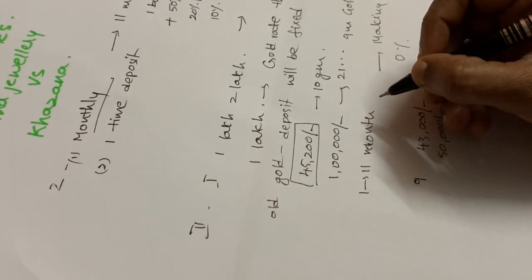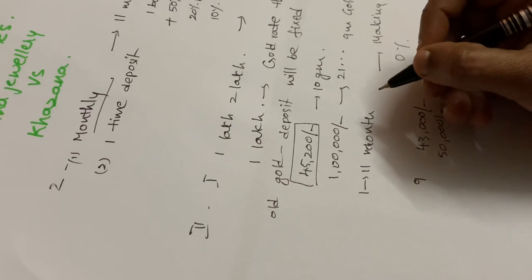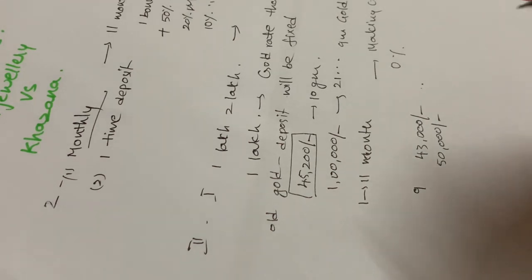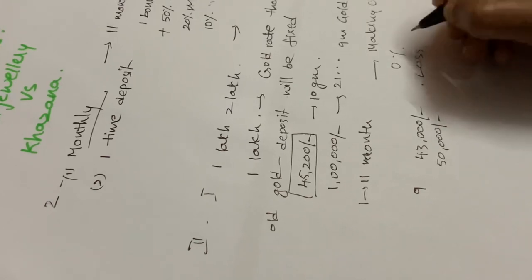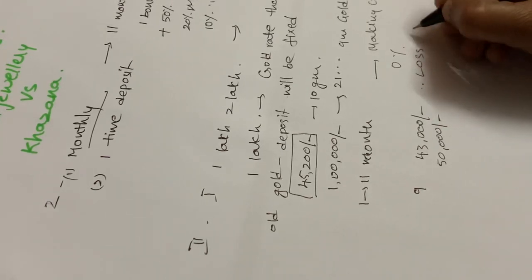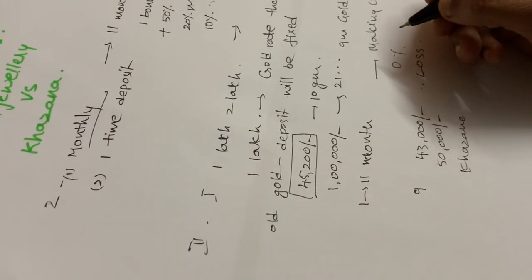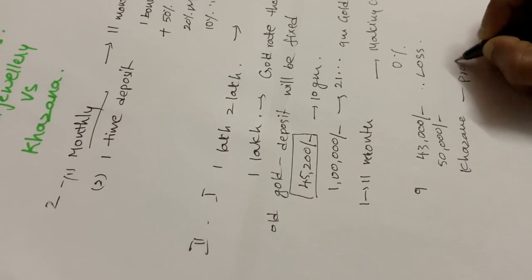If we go for 24 months, then the gold rate is fixed at the 12th month for us. Comparing the gold cost, if you get gold every year or in the last month, you will receive the gold accordingly.